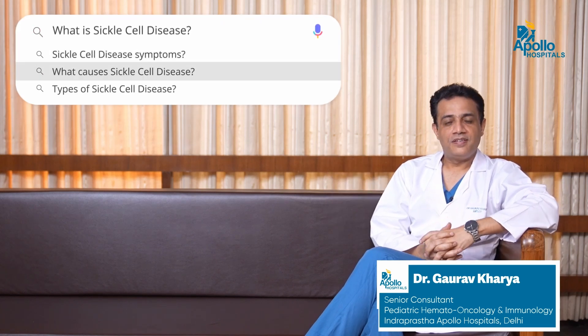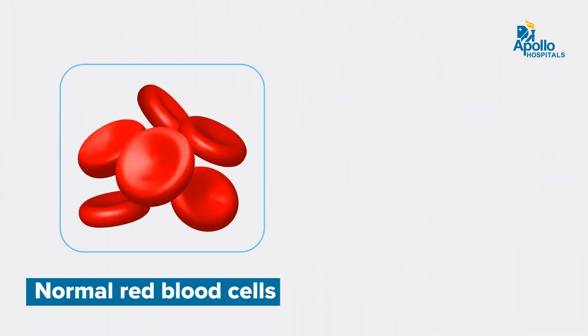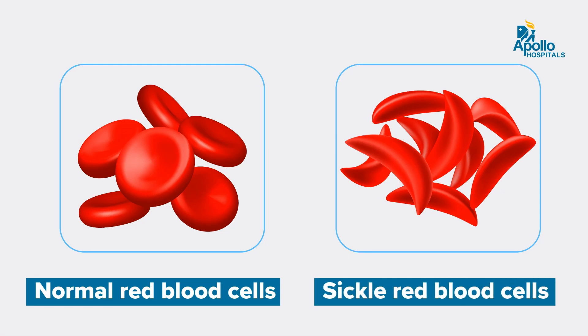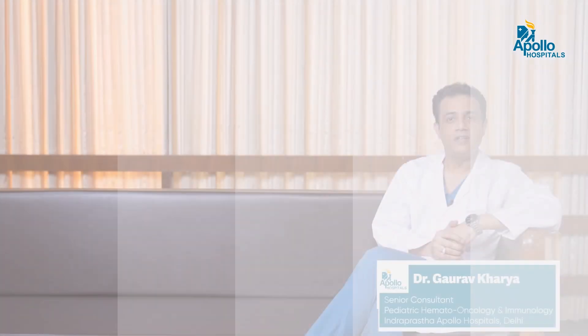Today I will be talking about sickle cell disease. Sickle cell disease is one of the commonest forms of red cell disorder across the globe. This is a disease where because of some underlying mutation, the shape of the red cell, which is usually a biconcave shape, is altered to the shape of a sickle cell — and that is where this disease derives its name: sickle cell disease.